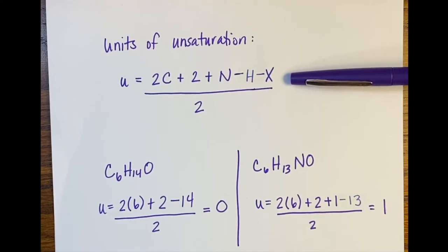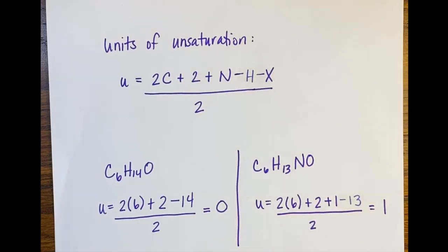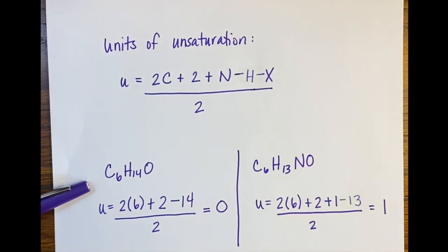When you calculate your units of unsaturation, one unit of unsaturation is equal to one pi bond or one ring being present in your structure. For example, with C6H14O, we plug in our 6 carbons and 14 hydrogens, and we get 0. Notice that the oxygen does not factor into this equation at all.